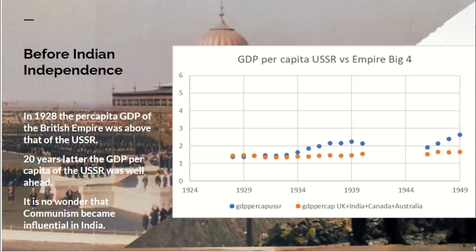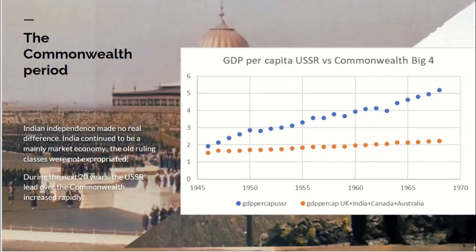It's no wonder that by the time of independence in India, communism was growing as an influence, and the fear of communist revolution was a factor in the British being willing to grant independence to India. But let's look at the Commonwealth period — after independence, when the UK, Canada, Australia, and India are four separate countries, members of the Commonwealth but four separate countries. Indian independence made no real difference to this trend, because the Indian economy was still mainly a market economy and the old ruling classes hadn't been expropriated. During the next 20 years, the lead of the Soviet Union over the territories of what had been the core of the British Empire became even more marked.